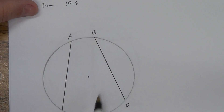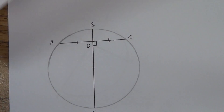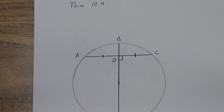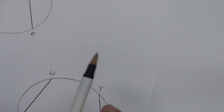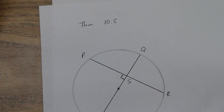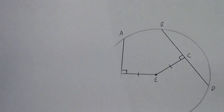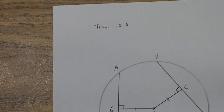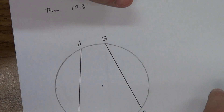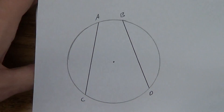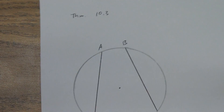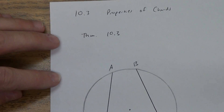We've got theorem 10.3, theorem 10.4, theorem 10.5, and finally theorem 10.6. So four theorems — we're going to run through them real quick. There's going to be a second video that shows you some examples of these theorems, and a third video that does some extra compass work. Those are both pretty short.